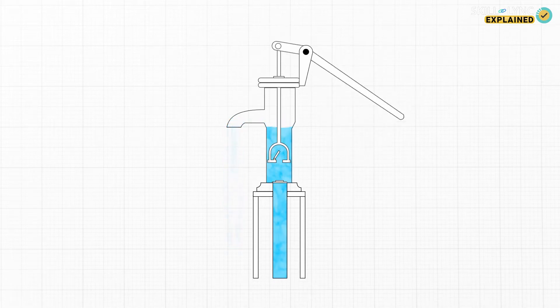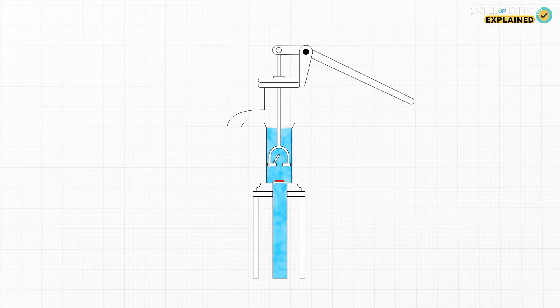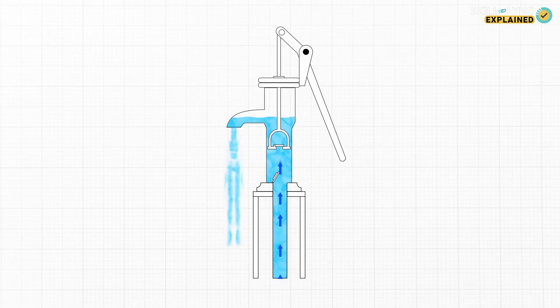There are two one-way valves inside that open up in the same direction. One valve is located on the piston and the other is placed at the base of the pump. When the plunger is pushed down the piston moves up and opens the valve at the bottom to draw water from the ground.